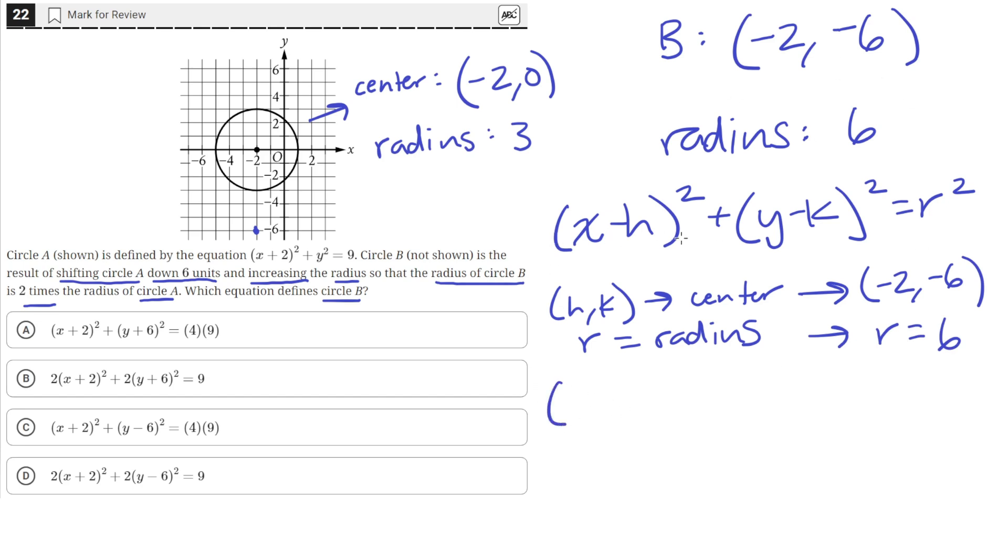So we can rewrite the equation by plugging in negative 2 for h. So it'll be x minus negative 2, that's just x plus 2 squared, plus y minus negative 6, that's just positive 6 squared, and then 6 squared, which is just 36.